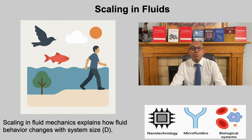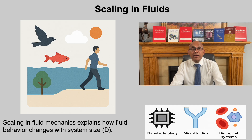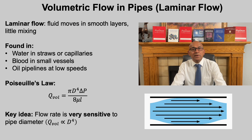All bodies, whether living or non-living, move in fluid environments — birds flying in air, fish swimming in water, or the flow of blood cells inside our body. These interactions with fluid are everywhere in nature and in technology. Scaling in fluid mechanics helps us understand how fluid behavior changes as the size of a system changes, which we represent by the characteristic dimension d. This idea is especially important in nanotechnology, microfluidics, lab-on-a-chip systems, and in biological systems such as blood flow in capillaries.